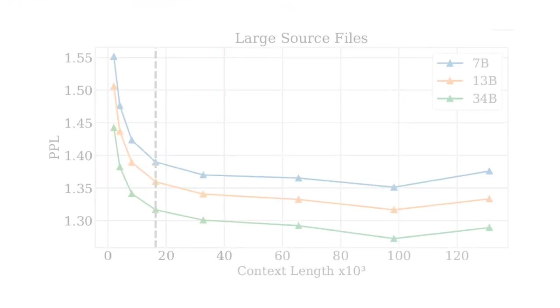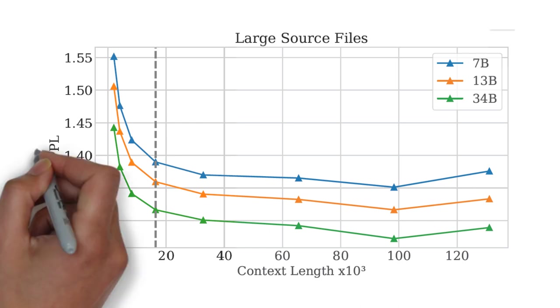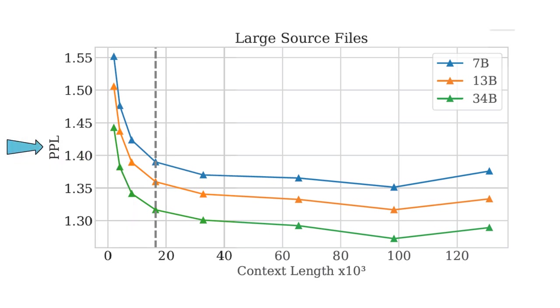To show this we can look at the following chart from the paper, where we see the perplexity of the models on the y-axis and the context length on the x-axis. The dotted line marks the context length in fine-tuning, which is 16k, and afterwards we see the perplexity keeps going down up to 100k tokens, and then starts to go up.